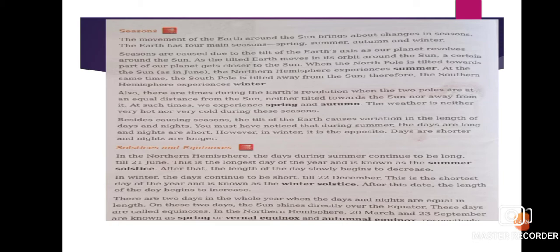Underline summer solstice and winter solstice. There are two days in the whole year when the day and night are equal in length. On these two days, the sun shines directly over the equator — these days are called equinoxes. In the northern hemisphere, 20th March and 23rd September are known as the spring or vernal equinox and autumnal equinox respectively.